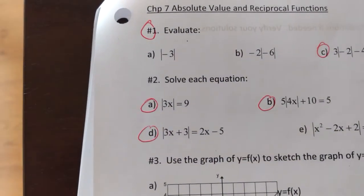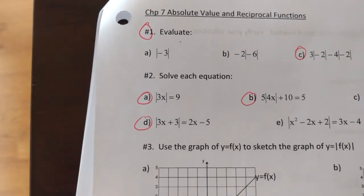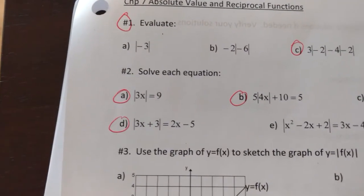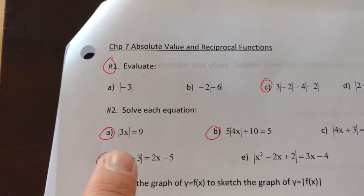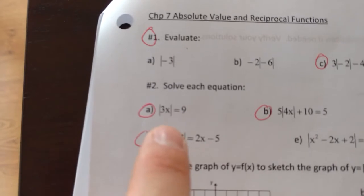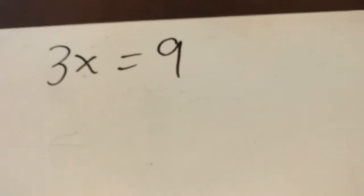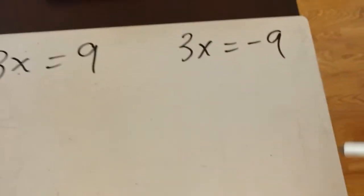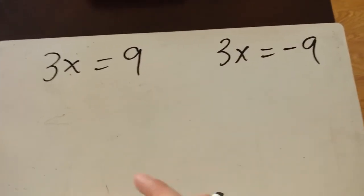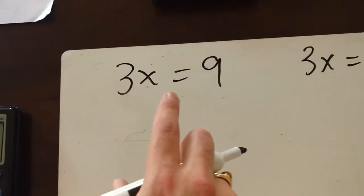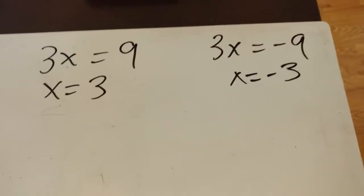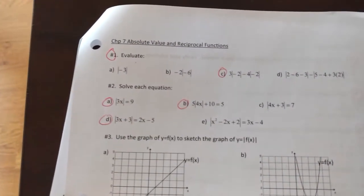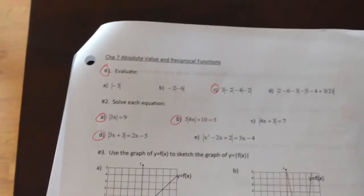The next one is question 2a: solve the absolute value of 3x equals 9. Remember, absolute value makes whatever's inside positive. So 3x could have been positive nine, but it also could have been negative nine, because the absolute value of negative nine still gives positive nine. We have to account for both cases, making two separate equations: 3x = 9 and 3x = −9. Solving these gives x = 3 and x = −3. Now remember, with absolute value problems you absolutely must check whether the answers are actually true.